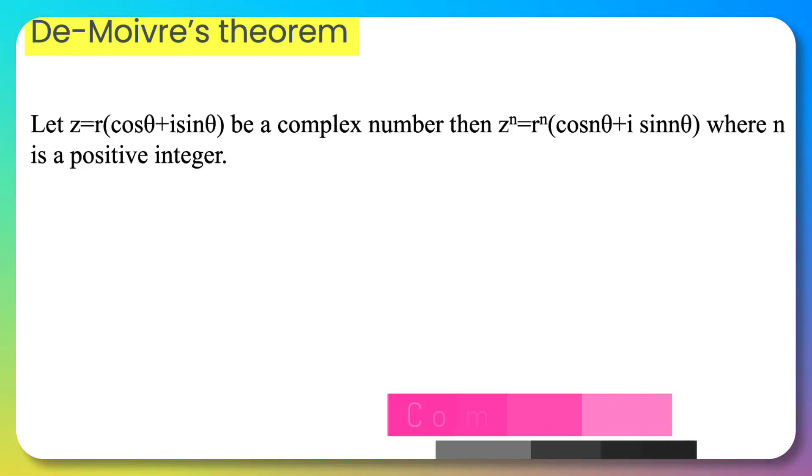Now we will talk about De Moivre's theorem. We have learned that we can convert complex numbers to polar form.